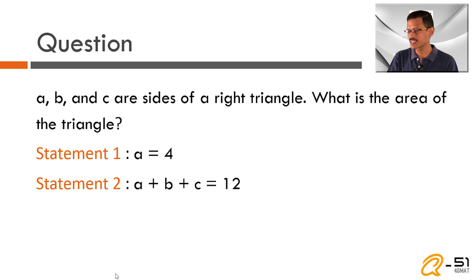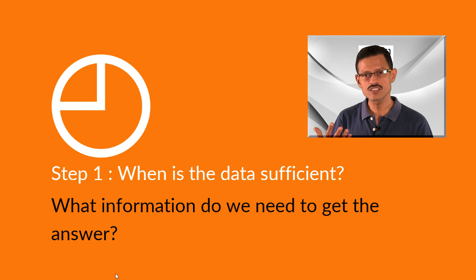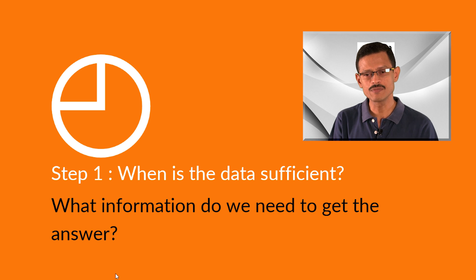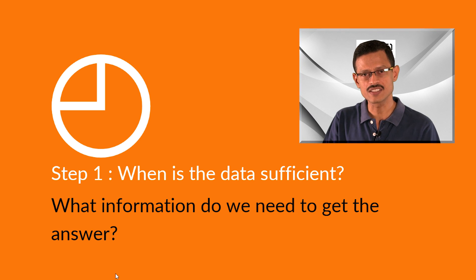A, B, C are sides of a right triangle. What is the area of the triangle is what we need to find out. The two statements that follow are: statement one — A is equal to 4, and statement two — A plus B plus C is equal to 12, meaning the perimeter is equal to 12. As with any DS question, we'll quickly take a look at the question stem before diving into the statements.